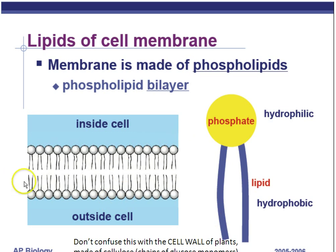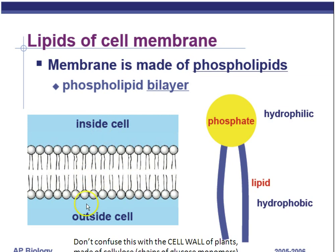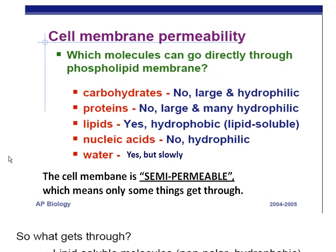Remember, the cell membrane is made of two layers of phospholipids. The phospholipid has two parts: a hydrophilic phosphate head and a hydrophobic, or water-fearing, tail made of carbon and hydrogen with no charge. Don't confuse that with the cell wall of plants, which is made of cellulose — chains of glucose molecules. All cells have a phospholipid bilayer, and the tails, because they're hydrophobic, are repelled by water and hide on the inside of the bilayer. The inside and outside water is attracted to the phosphates — they self-arrange in this bilayer because of their polarity. Part three will start with things that can move through the cell membrane.